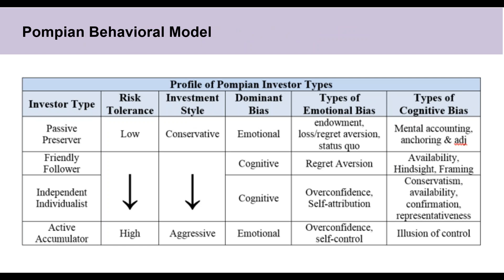Last but not least is the Pompian behavioral model, which divides investors into four different types determined through a behavioral interview — a four-step process. Basically, you interview the client to determine if they're active or passive as a proxy for risk tolerance, plot the risk tolerance on a scale, test for individual behavioral biases, and then classify into one of four categories: the passive preserver, the friendly follower, the independent individualist, and the active accumulator. As you can see in the table, there are parallels to the BBK model, and you should memorize the risk tolerances, investment styles, and dominant biases for each type.